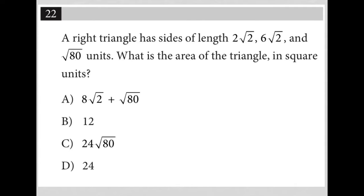So this question says a right triangle has sides of lengths 2√2, 6√2, and √80 units. What is the area of the triangle in square units?